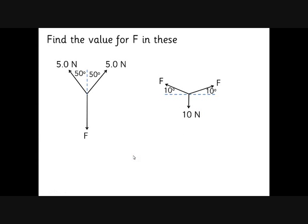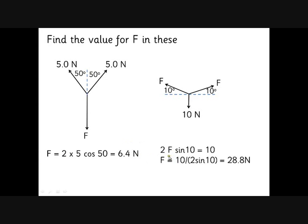Okay, try this one, see if we can do it, very much the same, this one again very much the same, just be careful of your cos and sins, have a go at those, pause the video if you need to. So in this one, we've got F cos 50 as the upwards force, we've got two of these, so 2 F cos 50, put that in the calculator, 6.4 newtons. Do the same with this, we've got 2 F sin 10 because we've measured the angle from the horizontal here. That gives us F equals 10 divided by 2 sin 10, 28.8 newtons. Okay, quite a big force sideways here because of the small angle.